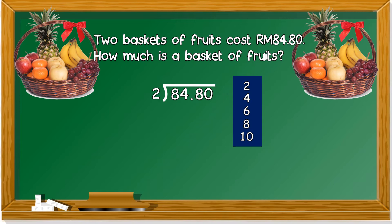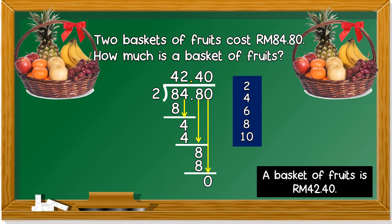We look. 8 divided by 2 is 4. We bring down the next number, 4. 4 divided by 2 is 2. Bring down another number. 8 divided by 2 is 4. Lastly, 0. Remember the point. So a basket of fruits is RM42.40.